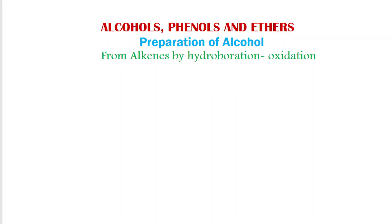Hello students, welcome to PSZ Chemistry Channel for easy learning. Today we are going to deal with preparation of alcohol from alkenes by hydroboration oxidation method. We have already seen the preparation of alcohol from alkene by acid catalyzed hydration, so here we are going to see only about the hydroboration oxidation of alkenes.